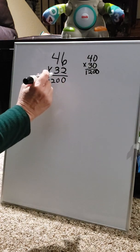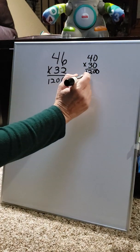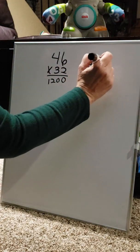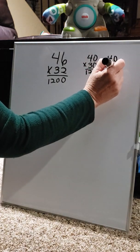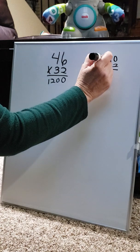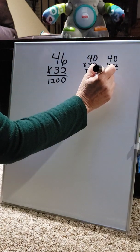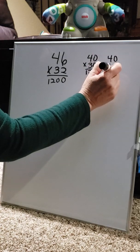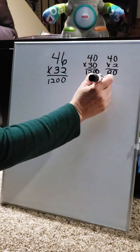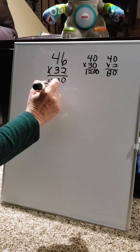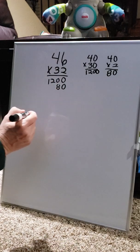Next, we're going to look at 40 times 2. Left to right. Put it down here. 40 times 2. 4 times 2 is 8. And 0 times, making it 80. And I'm going to bring it under the 1,200.